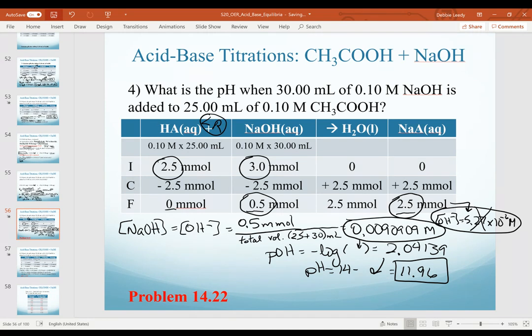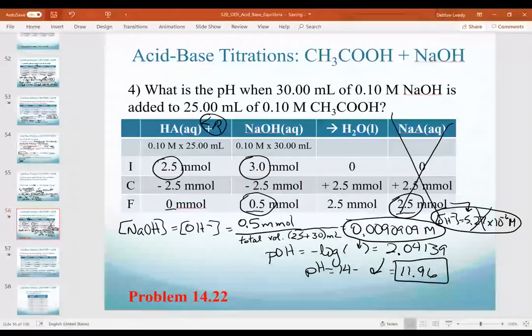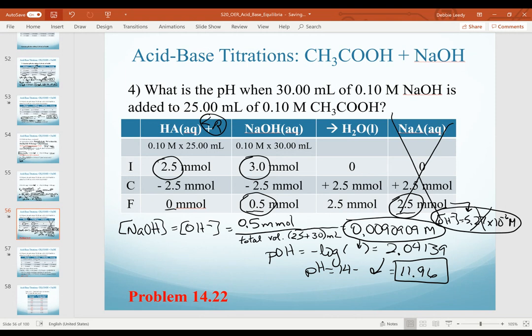If I asked for a volume close to the equivalence point, just past the equivalence point, this hydroxide from the salt might be a factor, but I will not ask for those volumes. And so anytime you're past the equivalence point, you can omit the contribution of the basic salt to our pH.